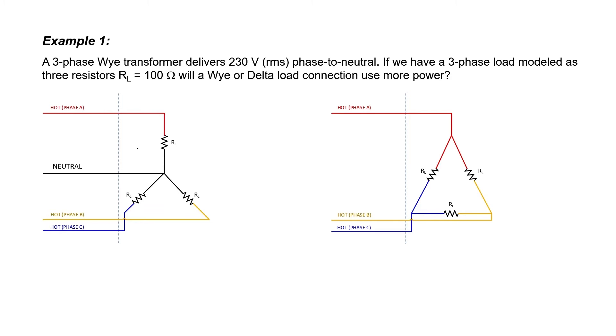Let's look at an example and compare a star connected load to the same load connected in the delta configuration. Let's assume that we have a three phase Y transformer delivering us 230 volts phase to neutral. So we'll imagine that we're somewhere in continental Europe or over here in Asia. If we also have a three phase load modeled as three resistors, and we're going to assume here that they're balanced, which of these two connections is going to use more power? The Y connection or the delta connection? Keep in mind, this is exactly the same load. We're just going to wire it up in two different ways and then do a comparison.